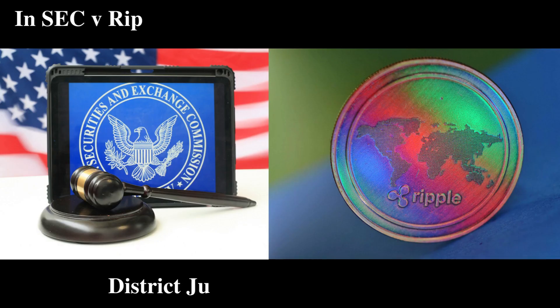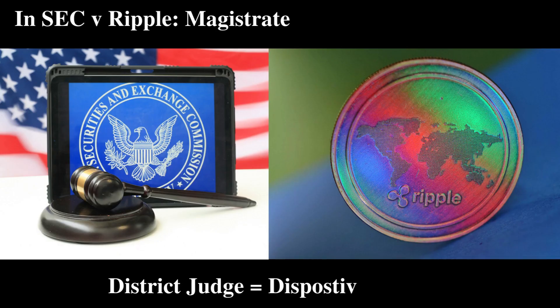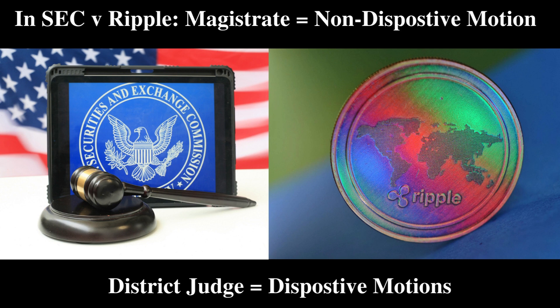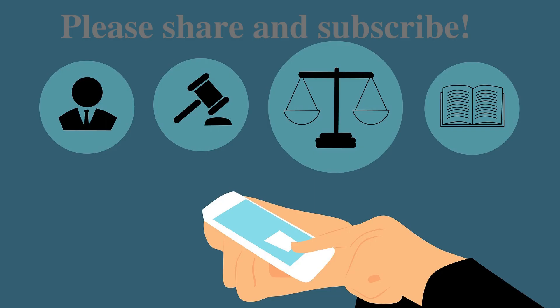In the SEC Ripple case, the district judge gave only part of the case to the magistrate — just the pretrial proceedings, including discovery, non-dispositive pretrial motions, and potential settlement talks. That is why you see the magistrate making rulings on various evidentiary disputes, but it was the district judge that ruled on the defendant's motion to dismiss, which is a dispositive motion that could have ended the case.